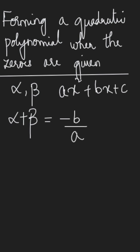And the product of zeros, that is alpha multiplied by beta, is given by the constant term, which is c, divided by the coefficient of x square, which is a. So using this relationship, we can form a quadratic polynomial when the zeros are given to us.